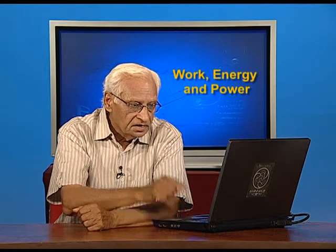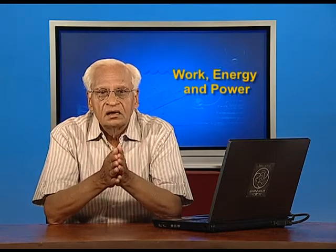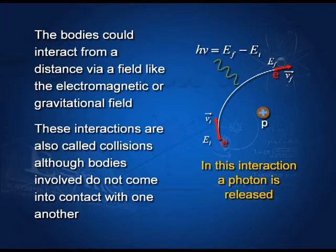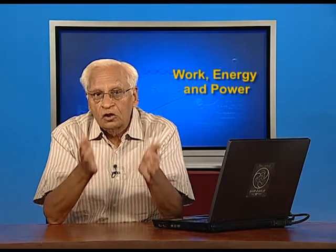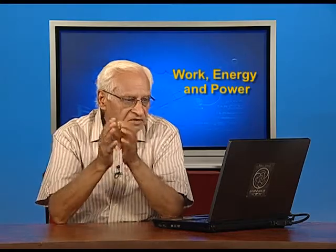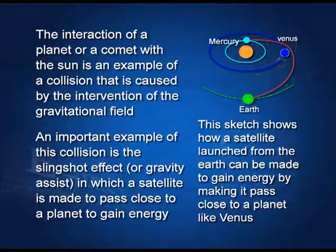However, there are collisions like the collision between a proton and an electron in which the particles do not touch one another. They interact from a distance — through a field. In the case of an electron-proton, through the electromagnetic field. They could also interact through the gravitational field. One important example of this kind of interaction is the slingshot effect.